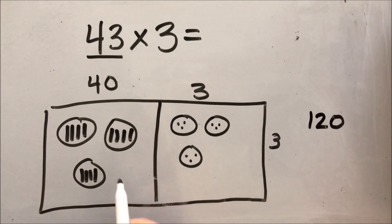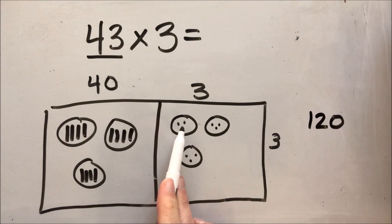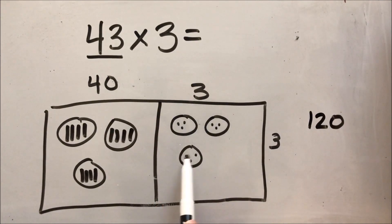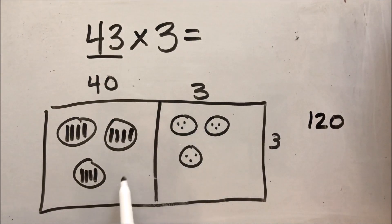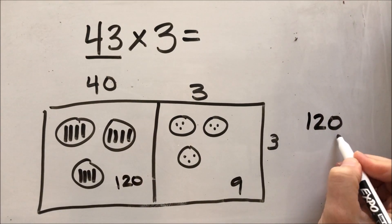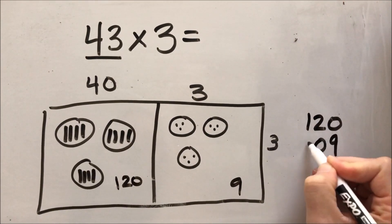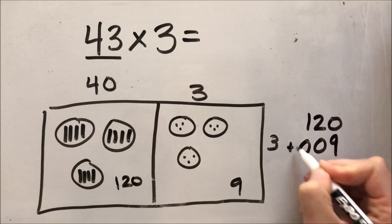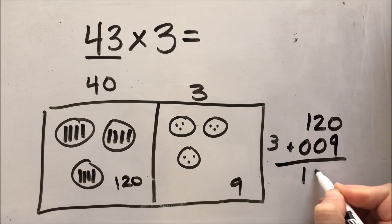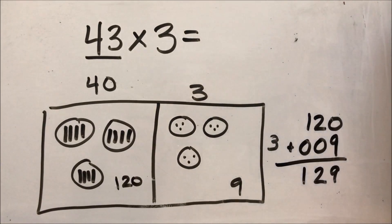Then I'm going to count my ones: 1, 2, 3, 4, 5, 6, 7, 8, 9. So I have 120 and 9, and when I add it up and carefully line up my numbers, I get my product of 129.